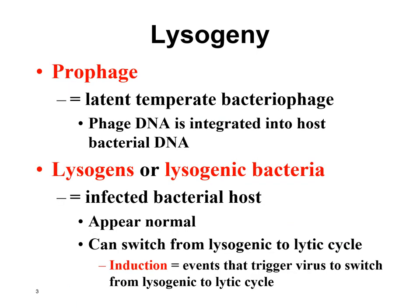Make sure you know the vocabulary words. In the lysogenic cycle, the prophage is the viral DNA that's inserted into the bacterial chromosome. The lysogen is the bacterial cell that has the viral DNA inserted into it.